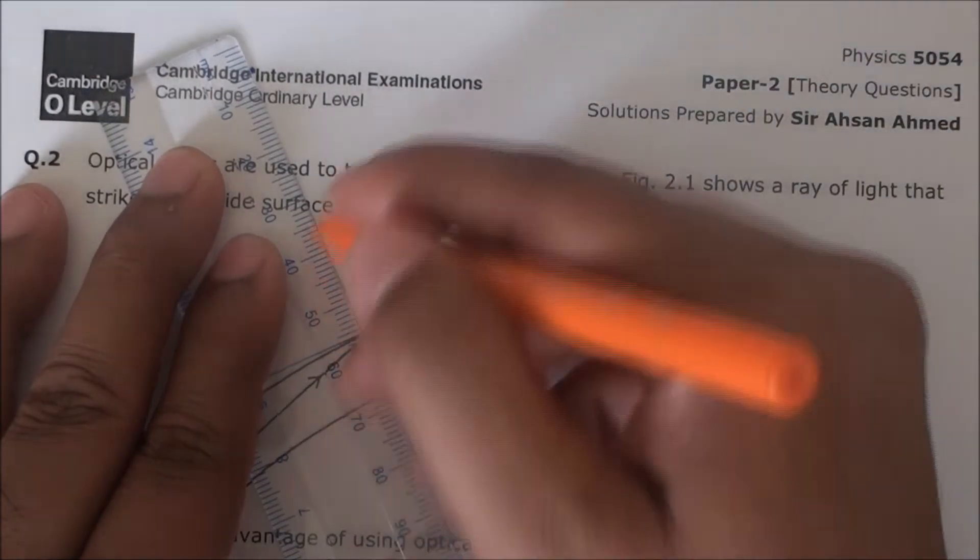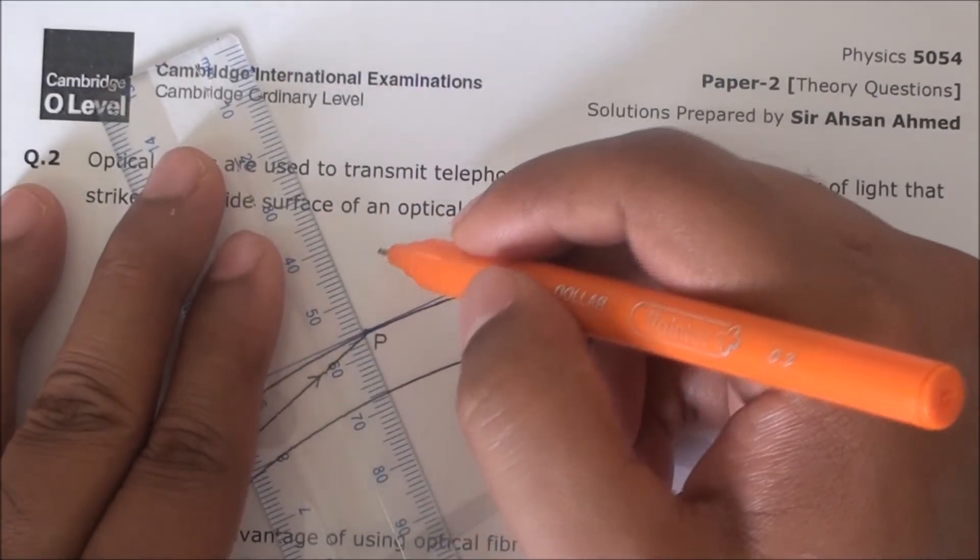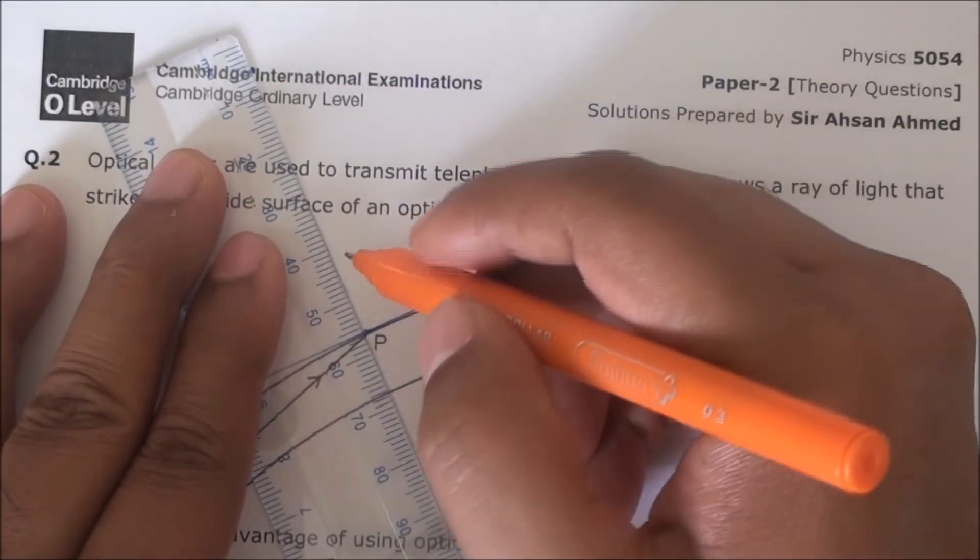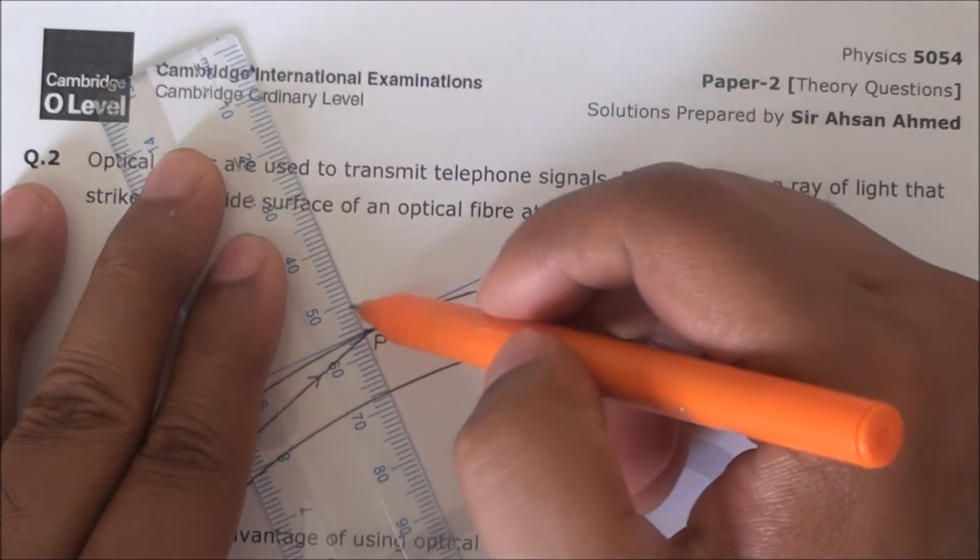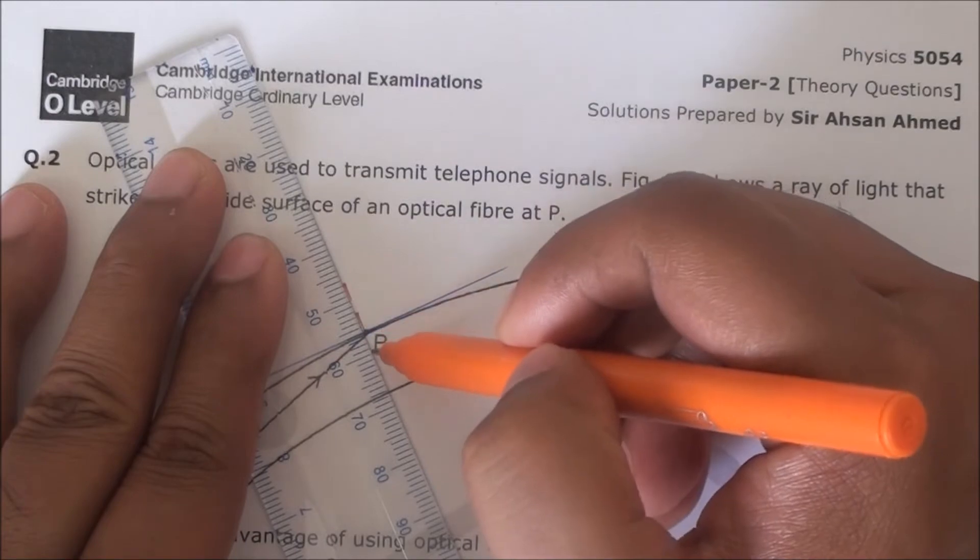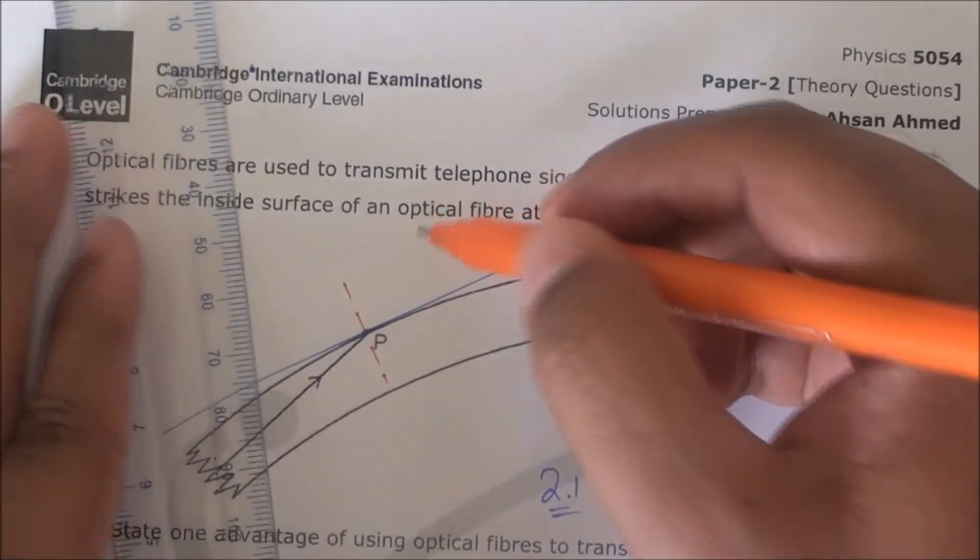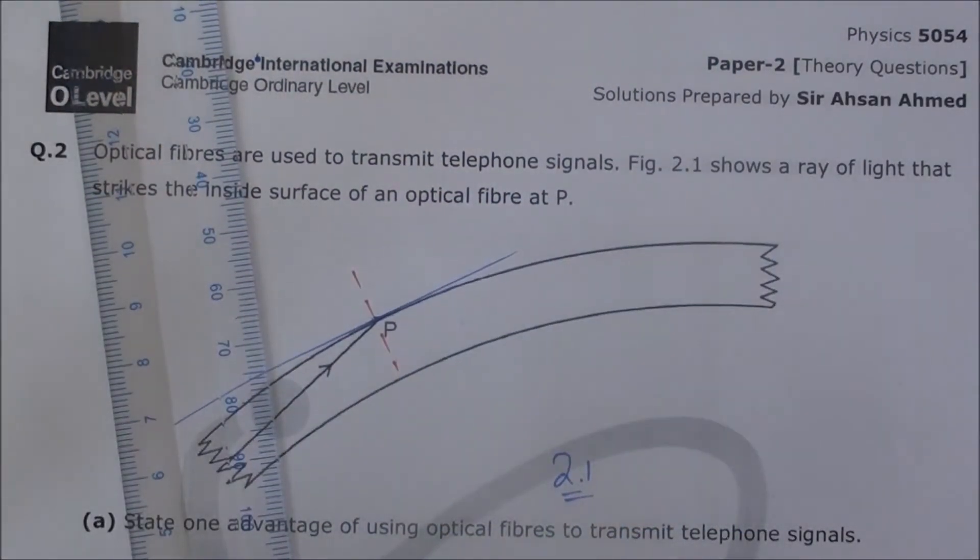We need to draw a small dotted line for the normal, crossing this point and P. So we have the ruler here, and this is the normal we have drawn. Half part is done.